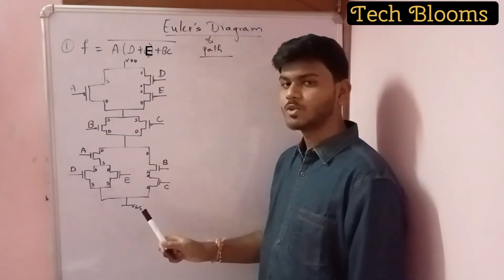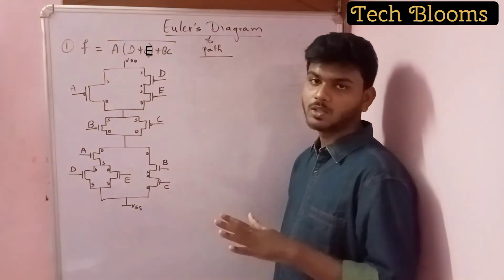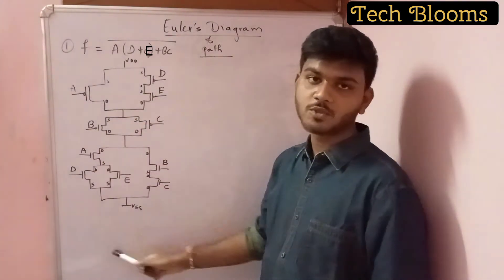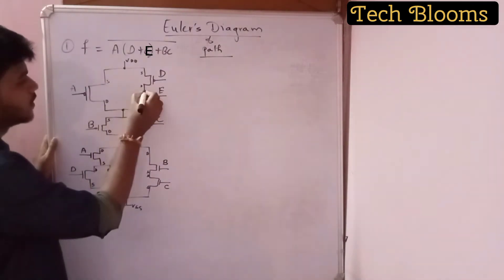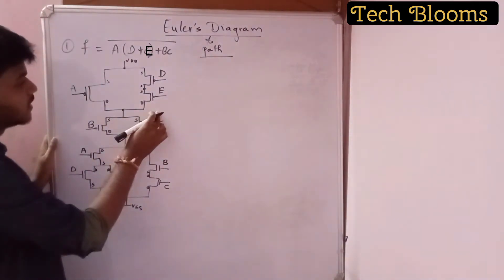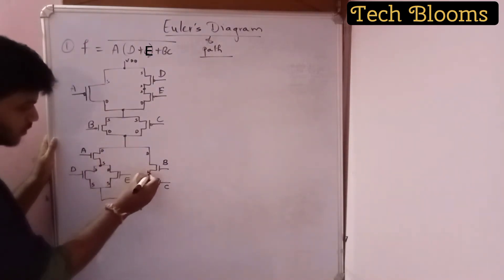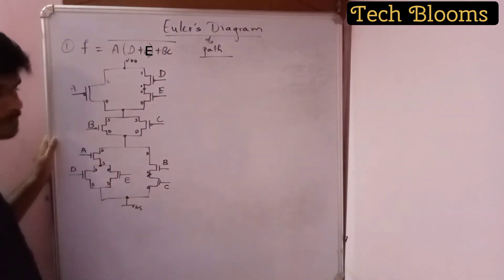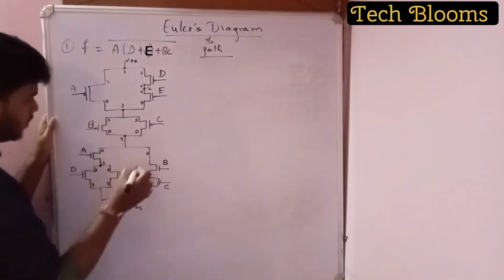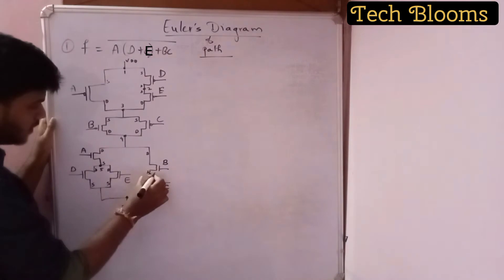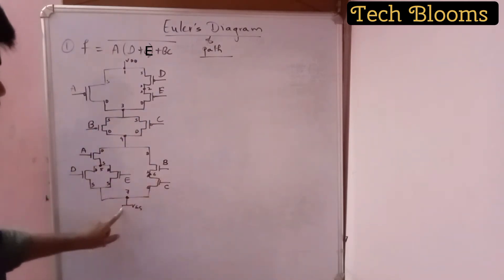From this CMOS logic we can construct the ULESS diagram. Now here are certain steps you need to follow. First, you need to name the nodes — give names to each of your nodes. I will be naming certain nodes. Some nodes are shared where two transistors are connected. I will name them as 1, 2, 3, 4, 5, 6, 7. So I have named my nodes.